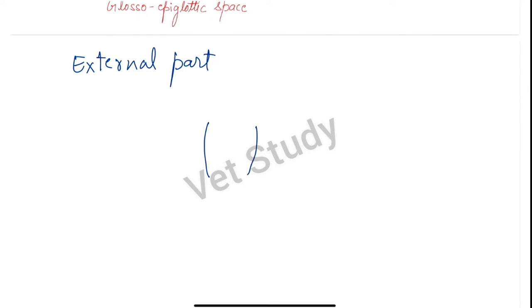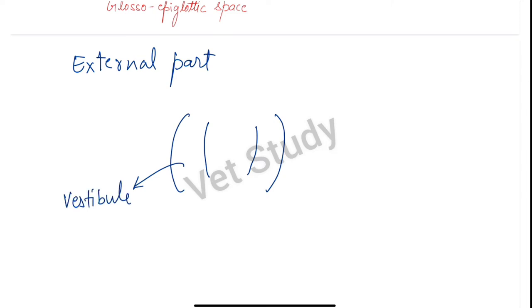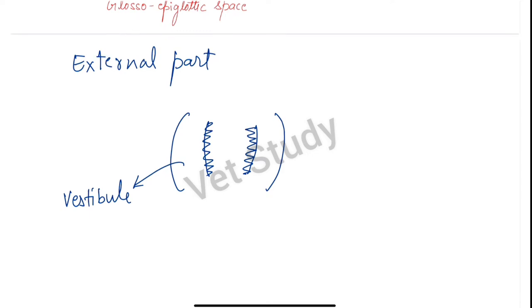Let's say that this is your teeth and these are the cheeks. The outer portion between the teeth and the cheeks is known as the vestibule. The vestibule is evident when food accumulates in this space. The space enclosed within the teeth and the alveolar process is the mouth cavity proper, or cavum oris propium.